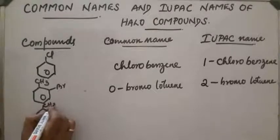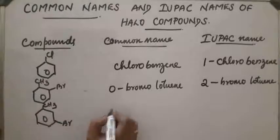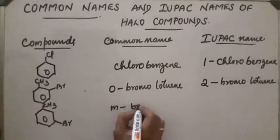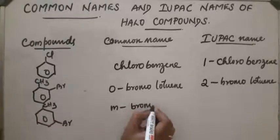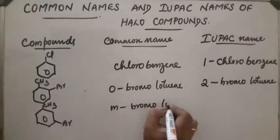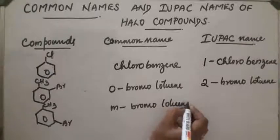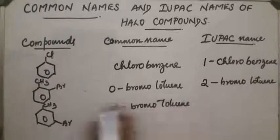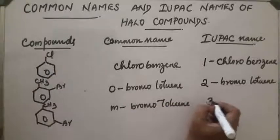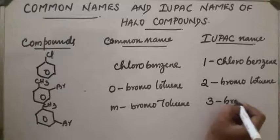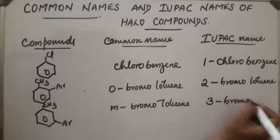Next compound: CH3 group with bromine at the meta position. The common name is meta-bromotoluene. The IUPAC name is 3-bromotoluene.